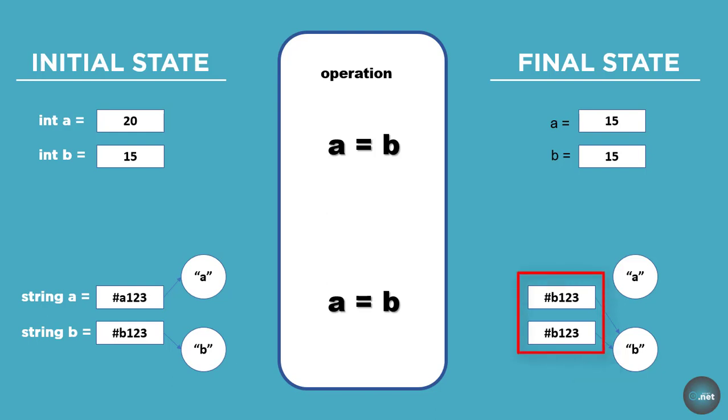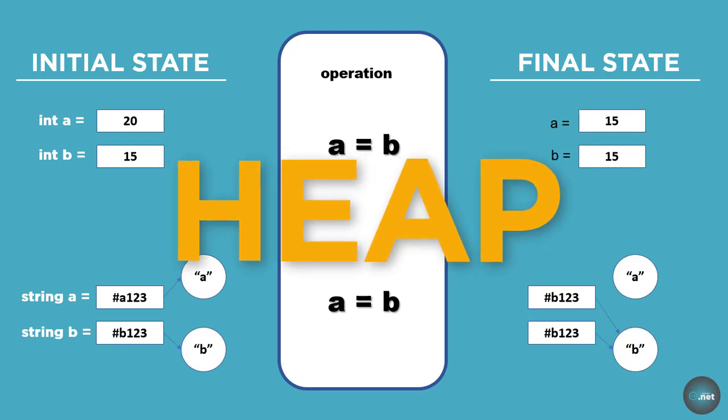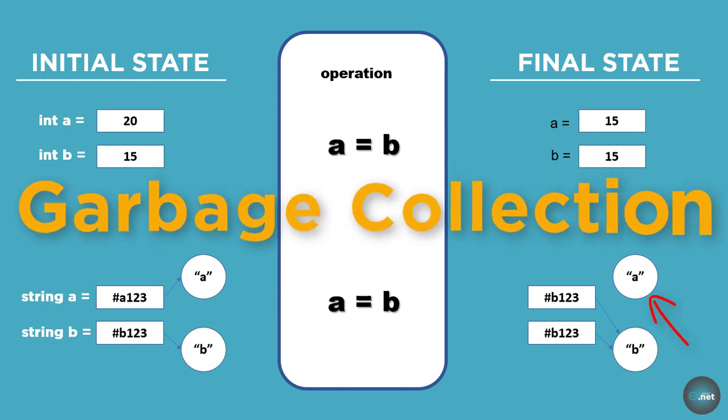In the final case, we see that instead it creates a second copy of the reference which refers to the same location in memory. Reference type variables are stored in a different area of memory called heap. This means that when a reference type variable is no longer used, like the a in this case, it can be marked for garbage collection.